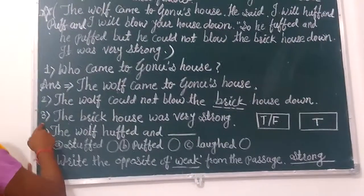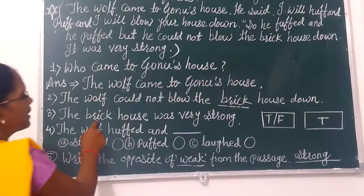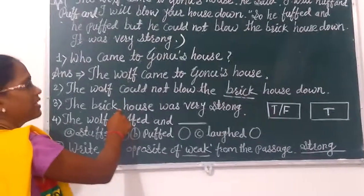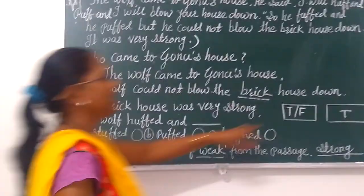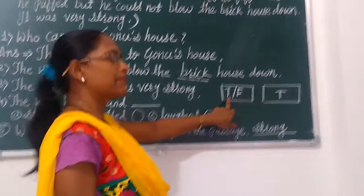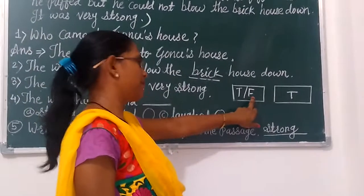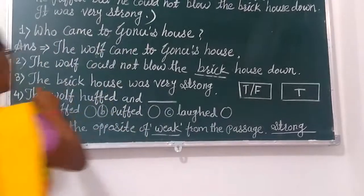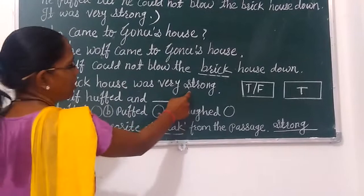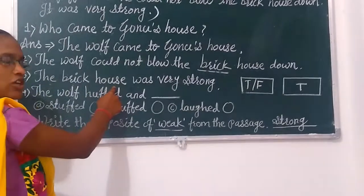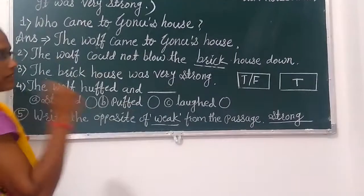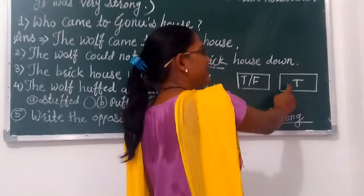Number three: The brick house was very strong. Here you choose the correct option — T means True and F means False. Read the statement: the brick house was very strong. That's true, so you write T here.